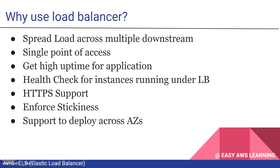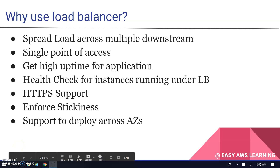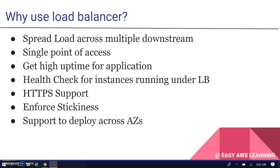Load balancer also supports HTTPS — that's called SSL termination. SSL termination means the load balancer handles termination of HTTPS requests and handles the connections between the load balancer and your instances. Next is stickiness. Stickiness is an enforcing of your request so that your customer is always redirected to the same instance every time. That support is also available in the load balancer. AWS also provides support to deploy across availability zones, giving high availability and helping in case of data center loss.